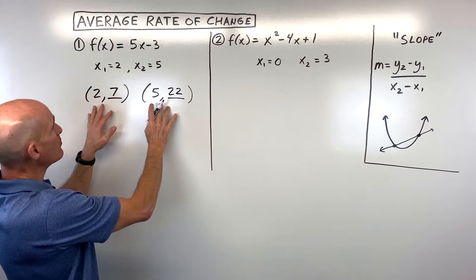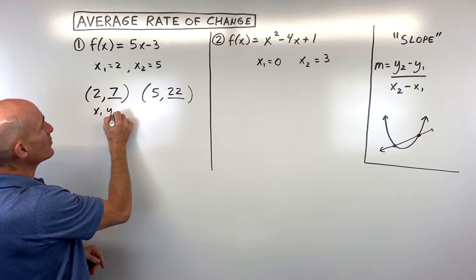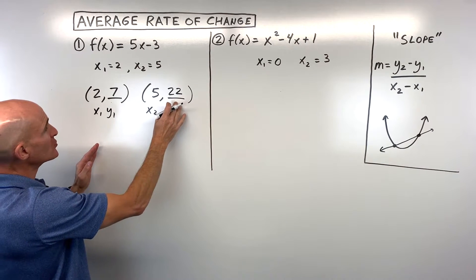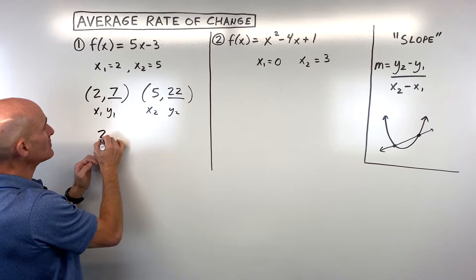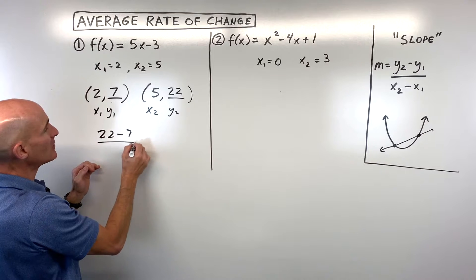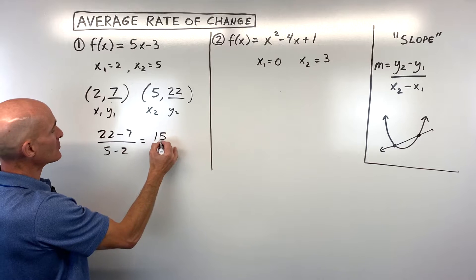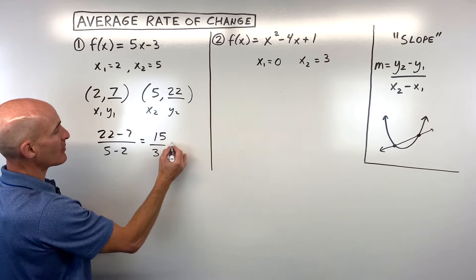Now we have our two points, you can think of this as x1, y1, and x2, y2. Using our slope formula, we're going to do y2 minus y1, so 22 minus 7, over x2 minus x1, so 5 minus 2, and that's coming out to 15 divided by 3, which is equal to 5.